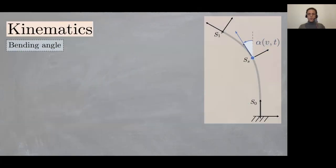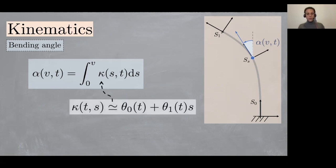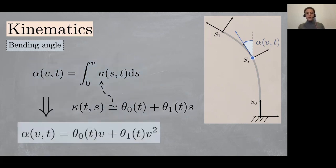But of course this is not enough, and to describe the kinematics we have to connect these two variables theta zero and theta one to position and orientation of all points along the structure. From basic theory of differential geometry of curves, the orientation is the integral of the curvature function, and since the curvature has been assumed to be affine, the result is in closed form.